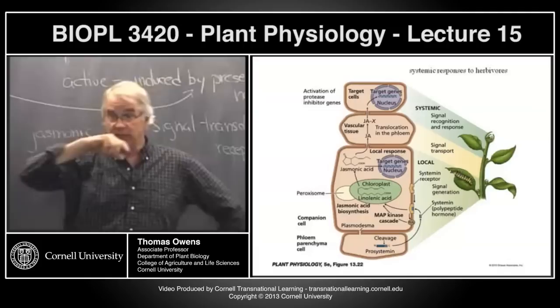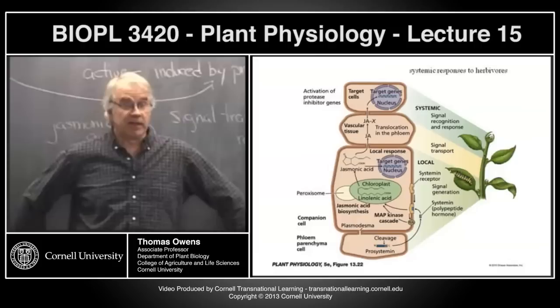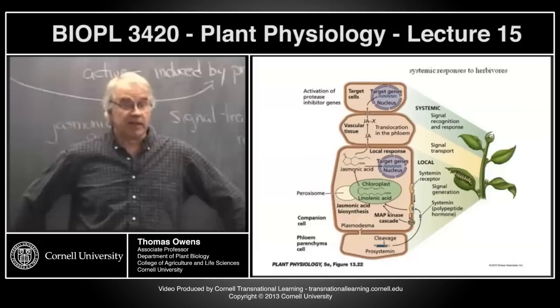Next time, we'll finish talking about what compounds are made to prevent herbivory, and complete our discussion of active response mechanisms associated with pathogens — bacteria and fungi. Then we'll go into the details of the signal transduction pathway connecting the presence of jasmonic acid to the turning on or off of specific genes.